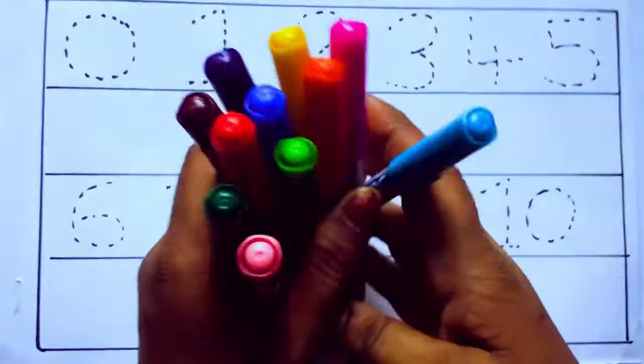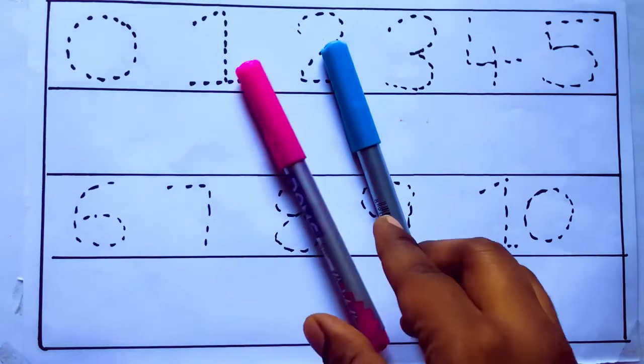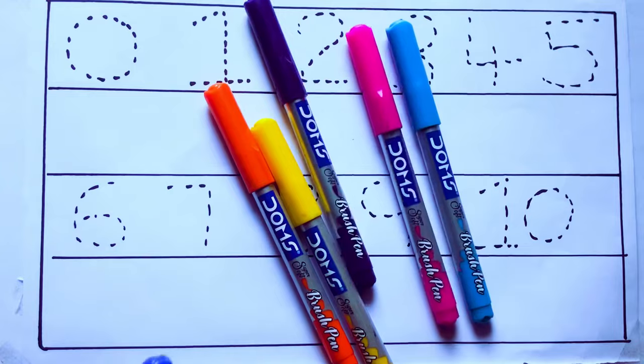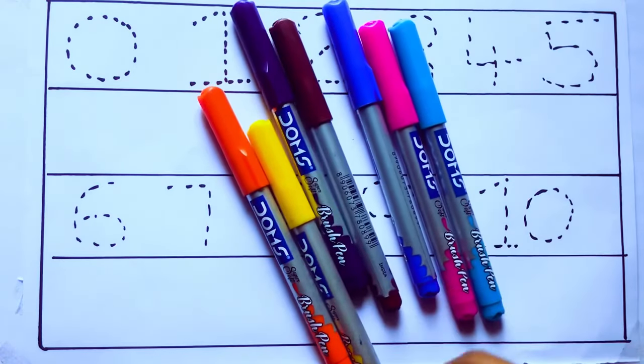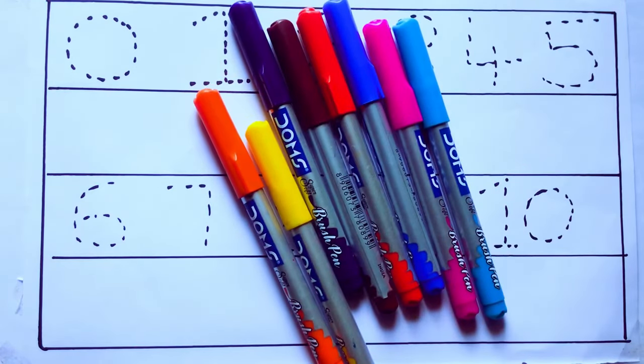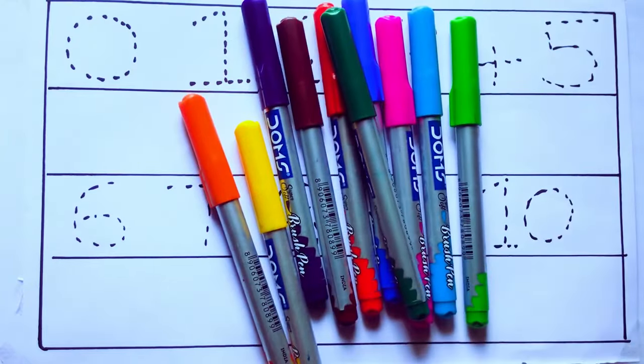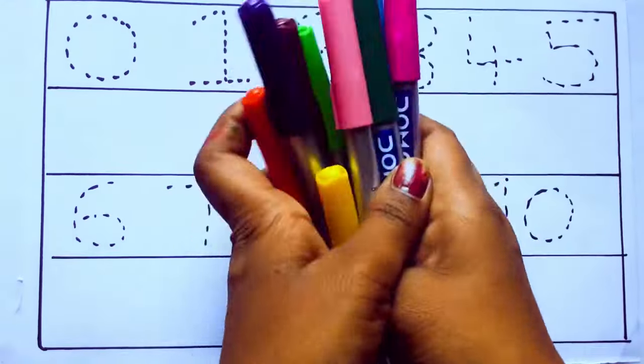Let's learn the names. Sky blue color, pink color, yellow color, orange color, violet color, blue color, brown color, red color, green color, and pink color.